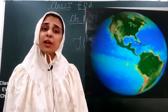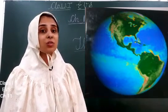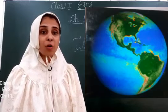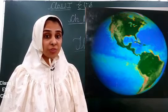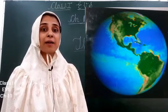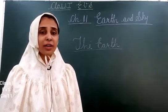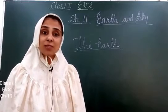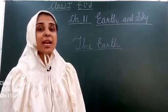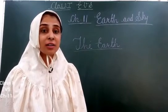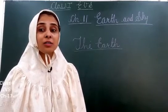Do you know why it is blue in colour? Because there is so much water. We have lakes, rivers, ponds, seas, and oceans. So it is blue in colour because it consists of water. And it also consists of land. We stay on land — fish and other creatures stay in water. So we have land and water on our earth.